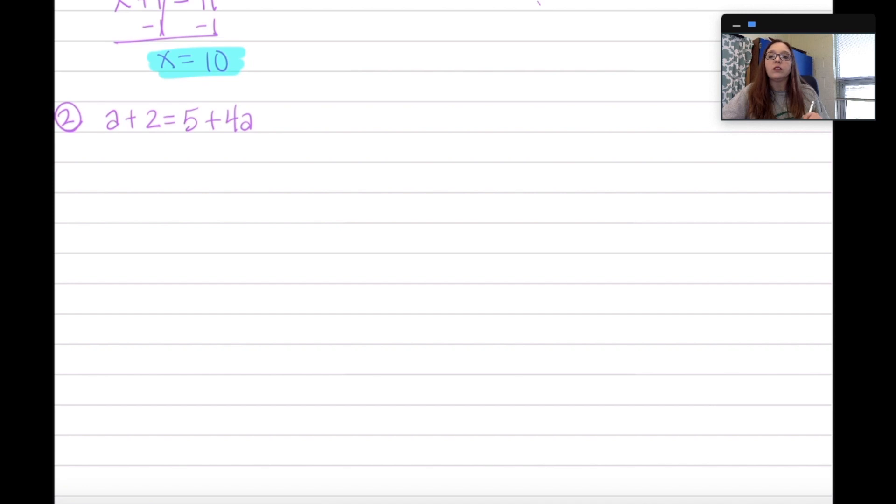So let's move all the variables together on one side. I can either move the A or I can move the 4A. Which one do you pick? Whichever one you want. This time, let's move the A. If I move the A, I'd be subtracting it because A minus A is 0. So I'm going to subtract A on both sides. A is the same as 1A. So I'm going to bring down the 2 and the equals. Go ahead and bring that 5 down. And that says 4A minus A, so that would be 3A. It's positive 3A. So I'm going to write plus 3A.